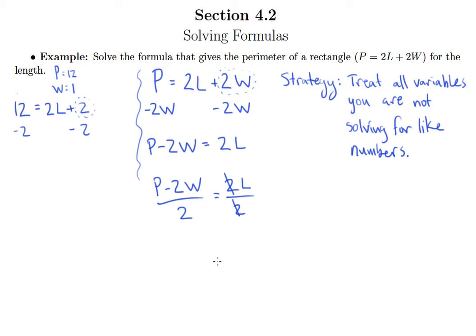So our formula that we get from solving for L is L equals P minus 2W over 2. So now if you know the perimeter of a rectangle and you know its width, you can plug them into this formula and you'll automatically get the length.